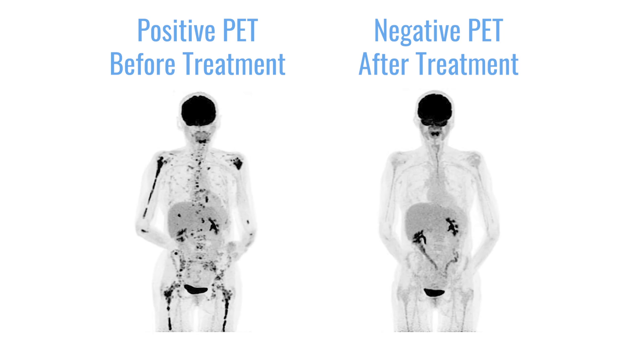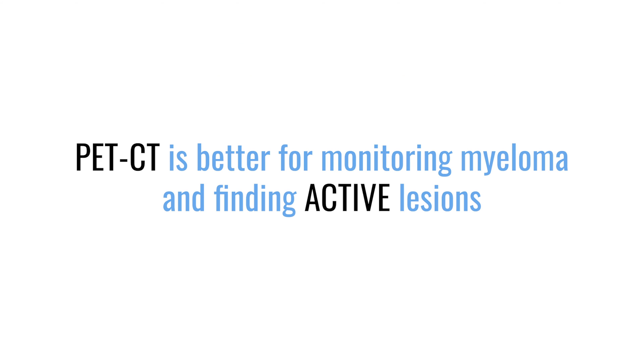As we treat myeloma, the CTs and x-rays may not change significantly. What we're looking for is that there are no new lesions developing, but imaging alone doesn't tell us if something is a treated lesion or an active lesion. Whereas if the PET scan was positive before, you can use it to follow the disease — and if the PET becomes negative through treatment, you know those lesions are no longer active.